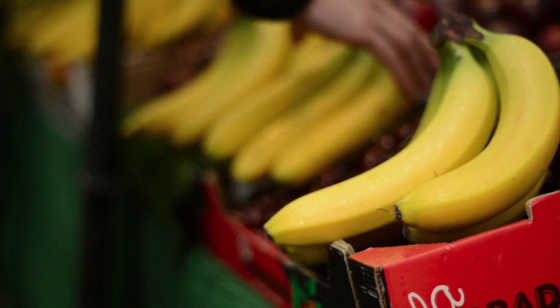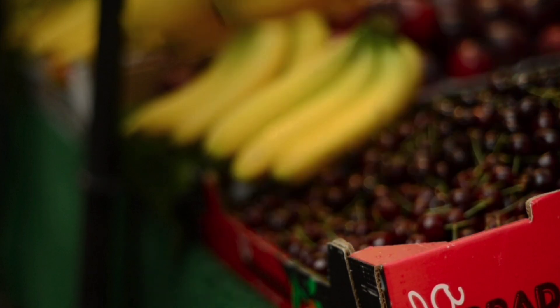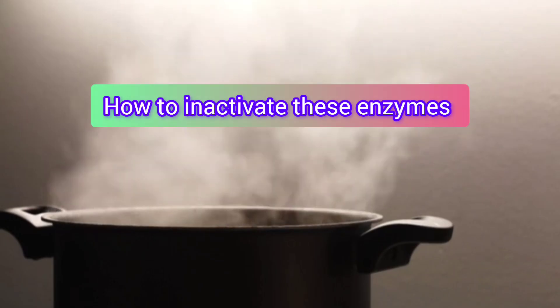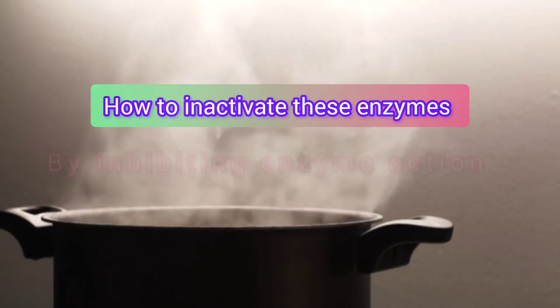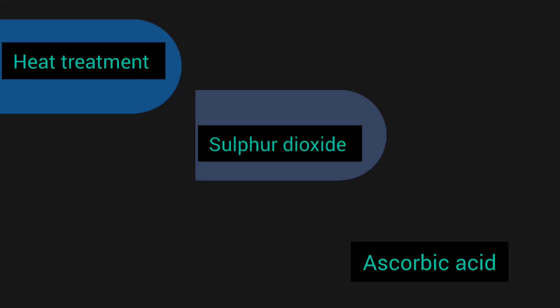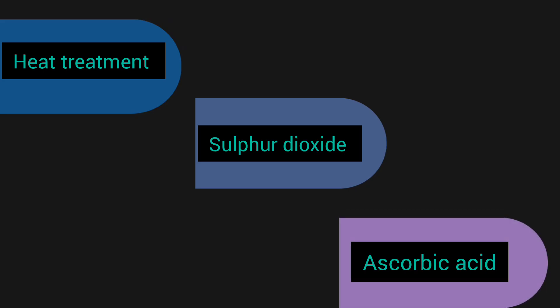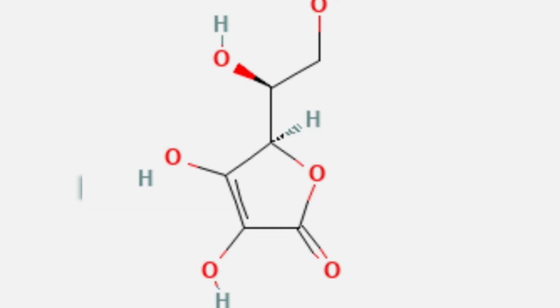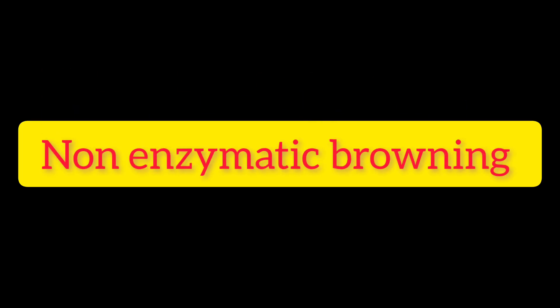Melanin formation is undesirable during the processing of fruits and vegetables. Pigment formation can be eliminated by inhibiting enzyme action. Heat treatment, addition of sulfur dioxide or sulfites, and ascorbic acid are commonly used methods for inactivating these enzymes. Both sulfur dioxide and ascorbic acid are strong reducing agents — they consume oxygen and destroy the browning activity of enzymes, and either of them may be added to products that tend to darken.